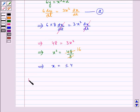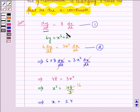Now, when x is equal to plus 4, substituting in the given curve we get 6y equals 64 plus 2.